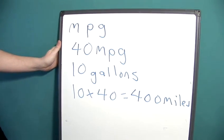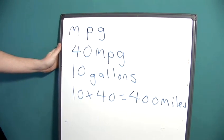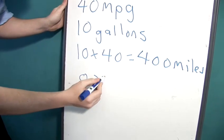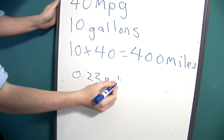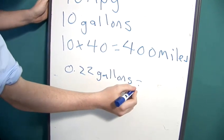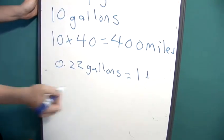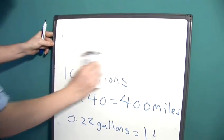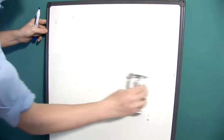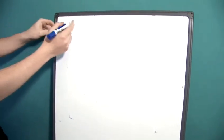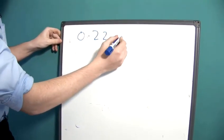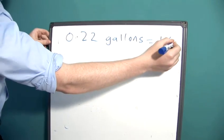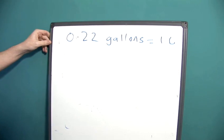Most of the time we will fill our car up in litres. What we need to remember then is 0.22 gallons is 1 litre. If we remember this, we can do a simple conversion and use the same calculation.